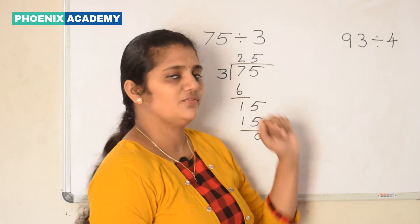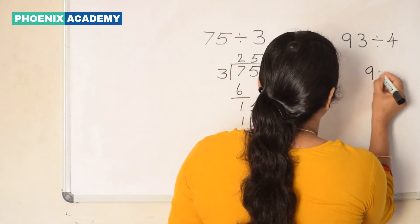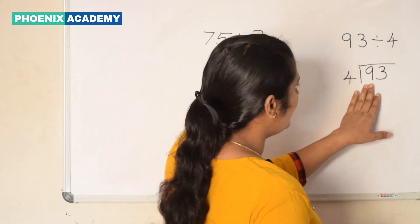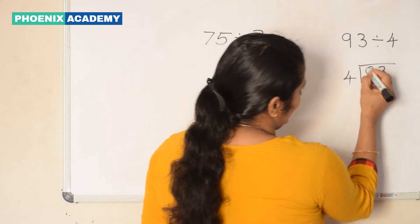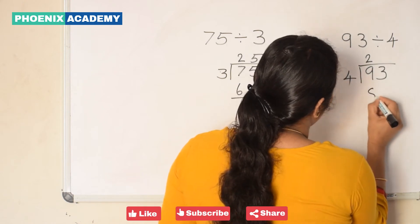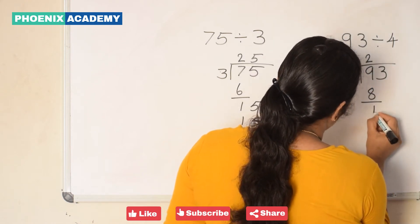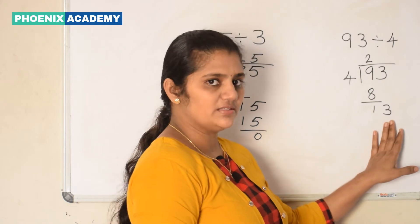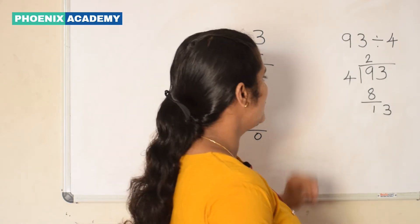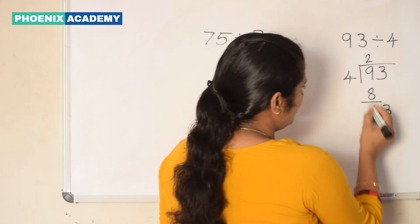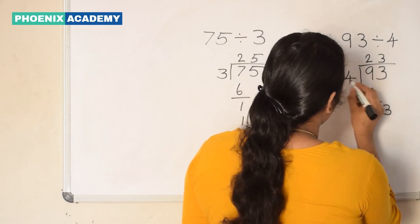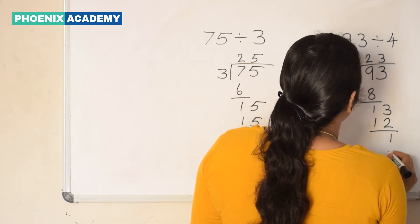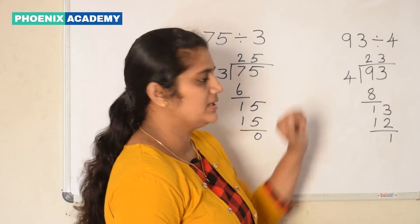Let's divide 93 by 4. First we divide 9 by 4. We have 2 4s are 8. 9 minus 8 is 1. Bring down 3 here and regroup 1 ten and 3 ones into 13. Let's divide 13 by 4. 3 4s are 12. So we take 3 here and subtract 12 from 13. We get 1 as the remainder and quotient is 23.